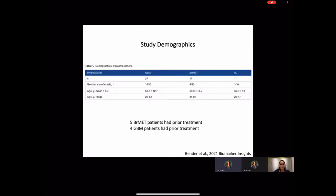Our study consisted of 27 glioblastoma subjects ranging in ages from 25 to 82 years of age, and we had 17 brain metastasis patients ranging in age from 31 to 81 years of age, and 11 healthy control plasma samples purchased from a commercial vendor.